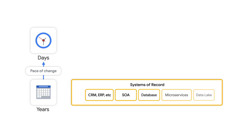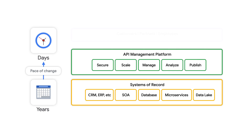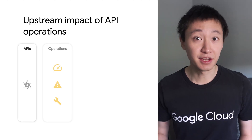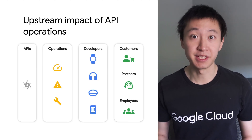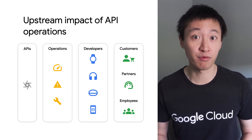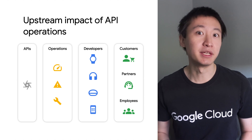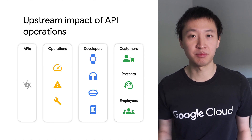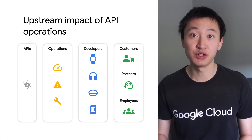So why is API operations important? APIs are packages of data and functionality that developers use to build new digital experiences quickly and easily. Since they encompass business-critical information, it's extremely important for operations teams to ensure that APIs are always available and performing as expected. But as API programs scale, it becomes practically impossible to manage individual APIs.